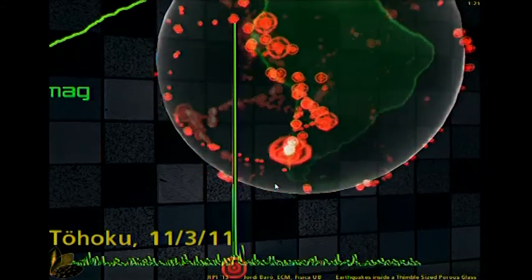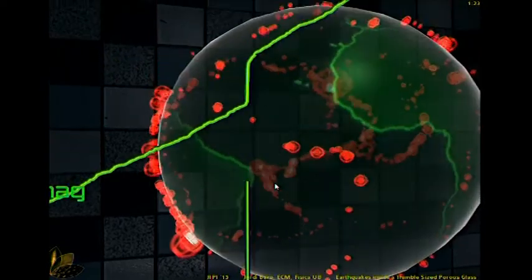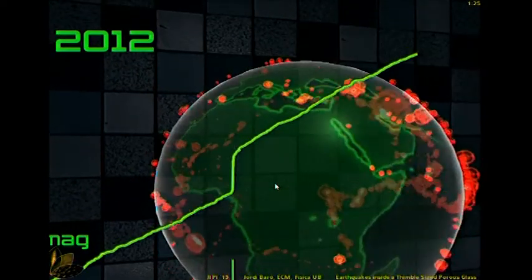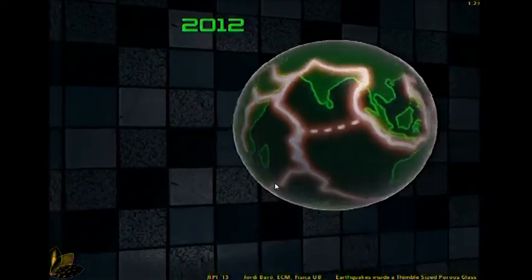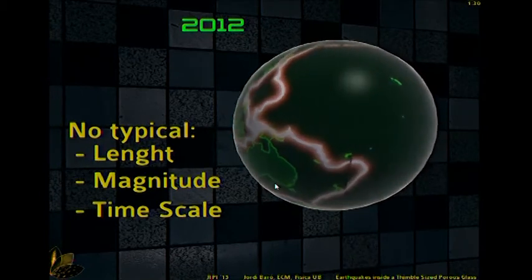And they have this aftershock sequence after a big event. For instance, this is the Japan big earthquake that tends to disappear over time. Overall, what we have is very similar to a critical system that has no characteristic scale.